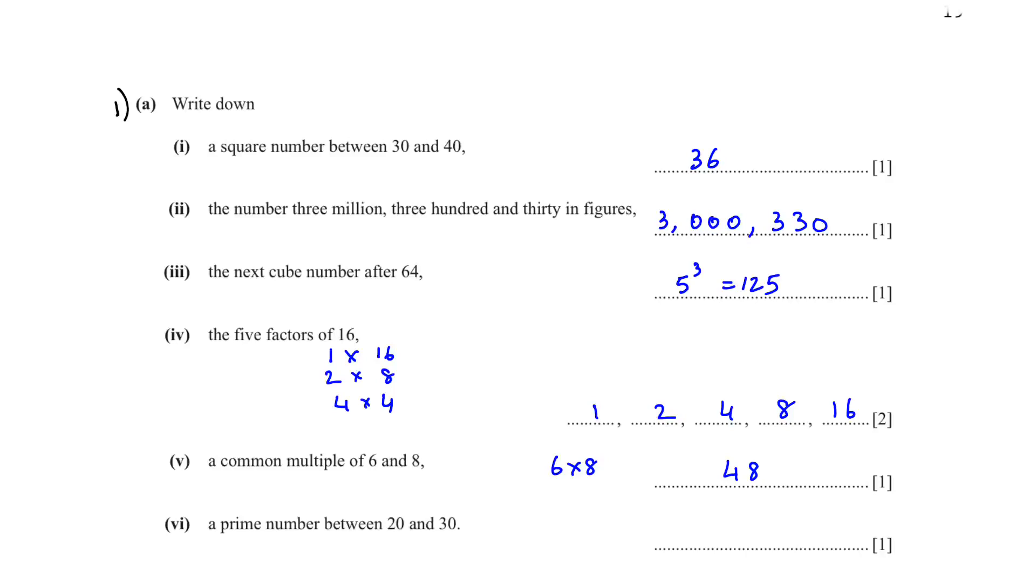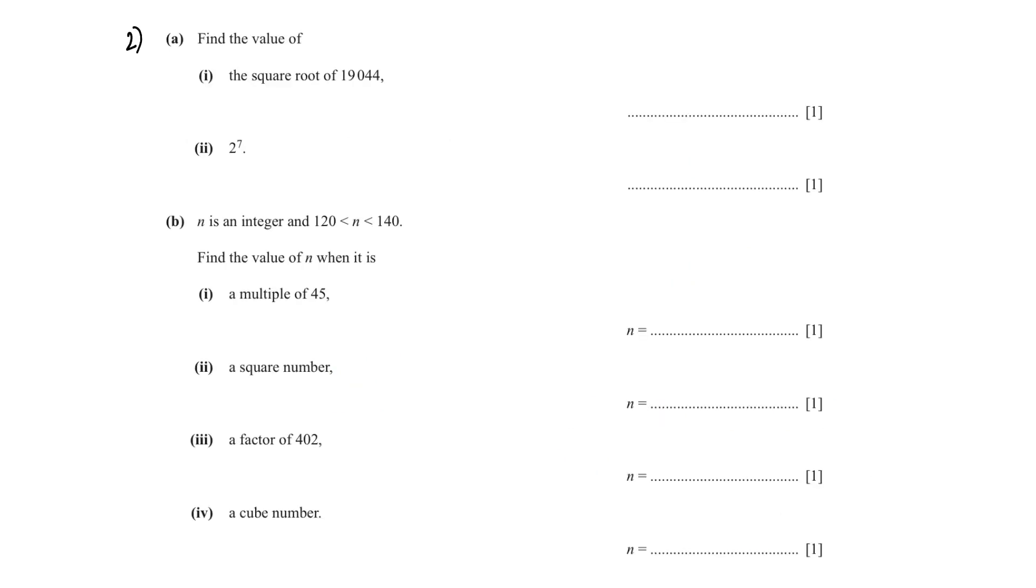So prime numbers are 23 and 29. Moving on to the next question, find the value of the square root of 19044. In the calculator write it like this, you will get the answer is 138. 2 to the power of 7 - put it in the calculator and you will get 128.